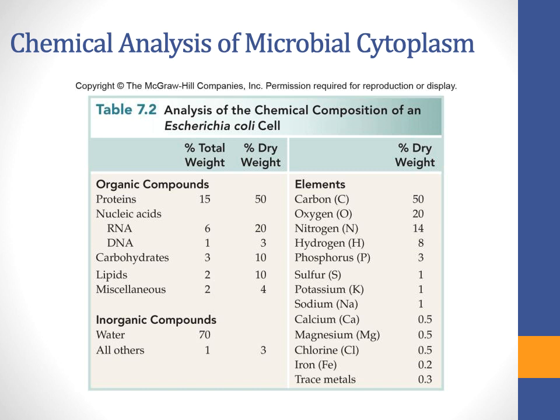Looking at a table from the textbook showing the chemical analysis of a microbial cytoplasm using E. coli, we can see the organic compounds — the macromolecules a cell would have. These percentages vary a little between different cell types, but on average they're going to be similar. If we look at total weight, proteins are going to be the bulk of what makes up a cell.